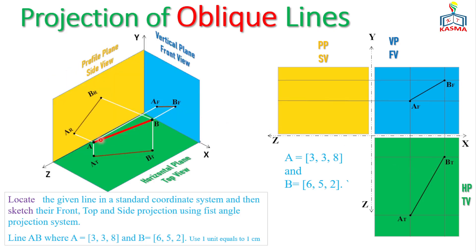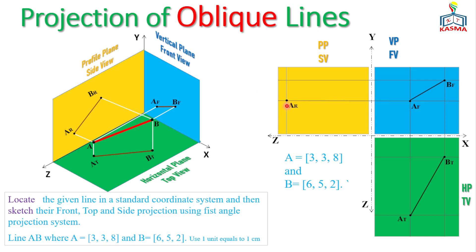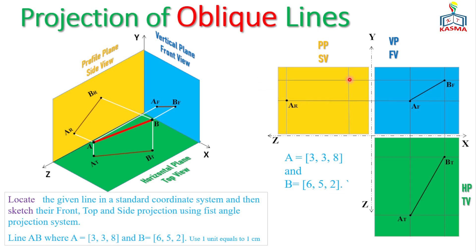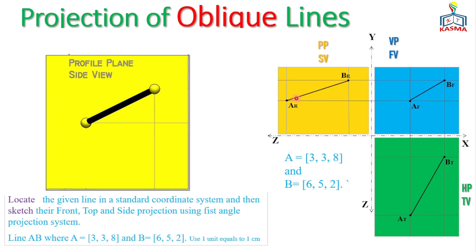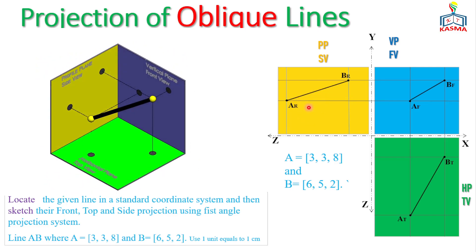For the side view, we project horizontally from the front view points. The side view uses the Y and Z coordinate system. For Point A, Y=3 cm and Z=8 cm — this gives A-right side view. For Point B, Y=5 cm and Z=2 cm — this gives B-right side view. Connecting these two points gives the side view projection of line AB.